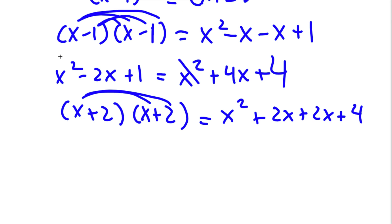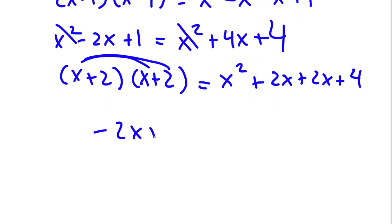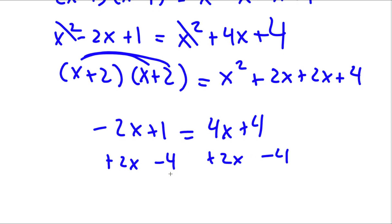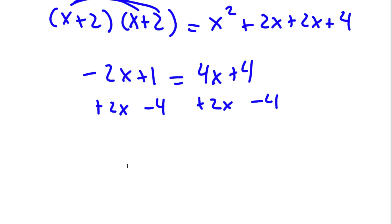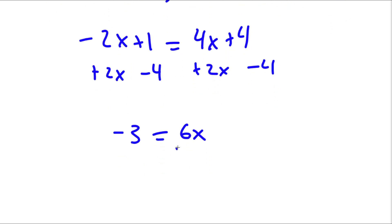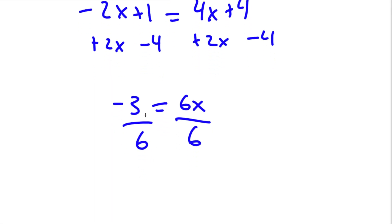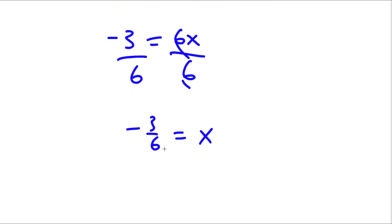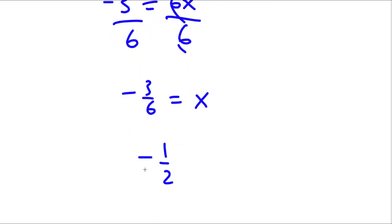Now these two can cancel out if I subtract x squared on both sides. So I get negative 2x plus 1 is equal to 4x plus 4. I can add 2x on both sides and subtract 4 on both sides. So now I have negative 3 is equal to 6x. Now if I divide by 6 on both sides, I have negative 3 over 6 is equal to x. Negative 3 over 6 is the same thing as negative 1 half. So I have x is equal to negative 1 half.